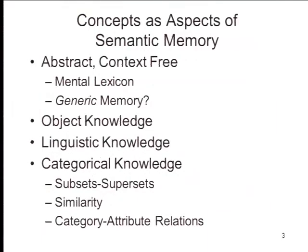Let's do a little vocabulary. We think about people's concepts as part of their repertoire of semantic knowledge — abstract, context-free knowledge about the world — as opposed to their episodic knowledge about specific events that occurred at a particular time and place. In semantic memory we have object knowledge: whatever objects you encounter in the world, if you know what they are, you identify them, you know what they're good for. That's semantic memory.